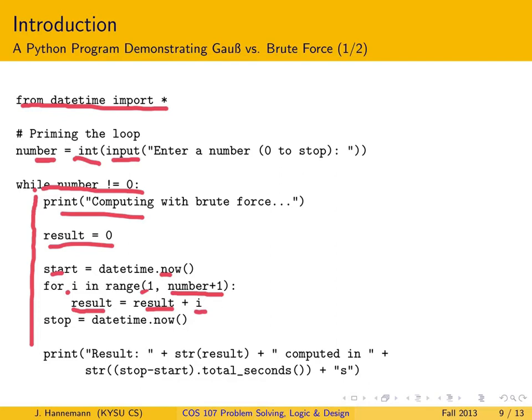When we are done, noting the indentation, the current time is taken again and assigned to a variable 'stop'. We use this to compute the difference, convert it into seconds — since it's usually expressed in nanoseconds tied to the CPU clock — convert the whole thing to a string so we as humans can understand it, and print it to the screen. That's the way to express the brute force method in Python.